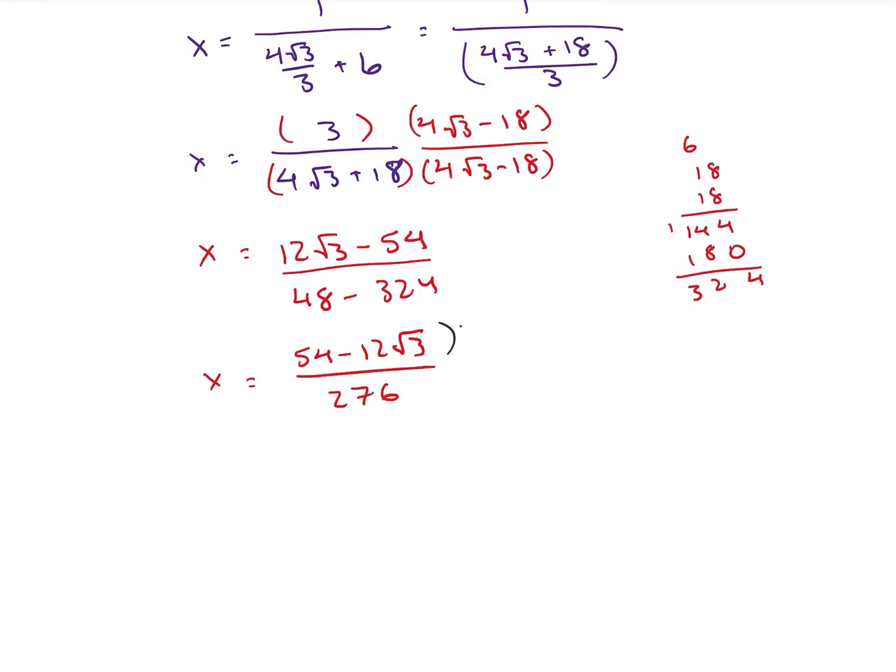And then we can go ahead and factor out a 6. So I'm going to do one sixth on the top and one sixth on the bottom. So my final answer here is going to end up being 9 minus 2 square root of 3 divided by 46. And that is going to be our most simplified version of our solution.